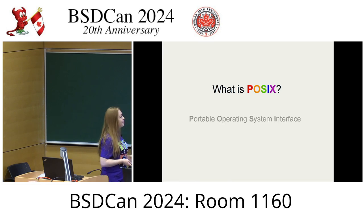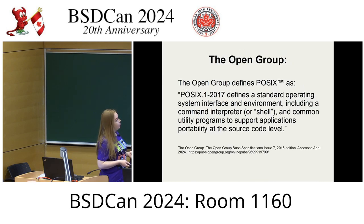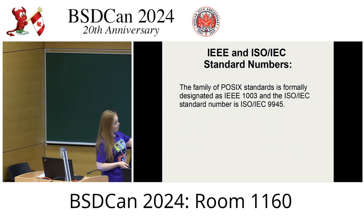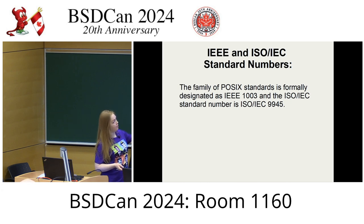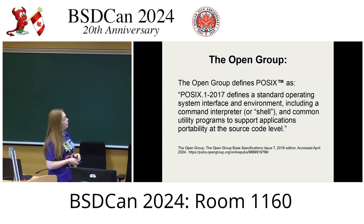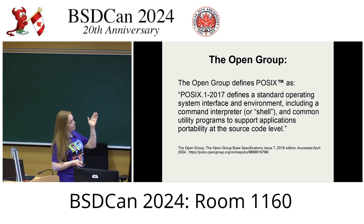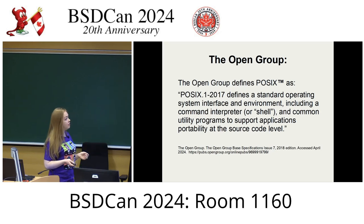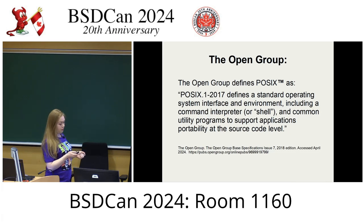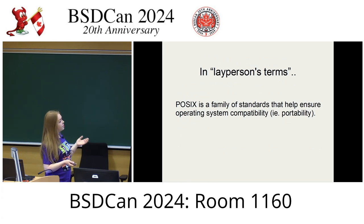So what is POSIX? It's the Portable Operating System Interface — but what really is it? The IEEE and the ISO define POSIX under the IEEE's 1003 standard, and the ISO defines it under standard number 9945. The Open Group, who is currently in charge of POSIX, defines it as a standard operating system interface and environment, including a command interpreter (a shell) and common utility programs to support application portability at the source code level. For beginners, POSIX is a family of standards that help ensure operating system compatibility — i.e., portability.